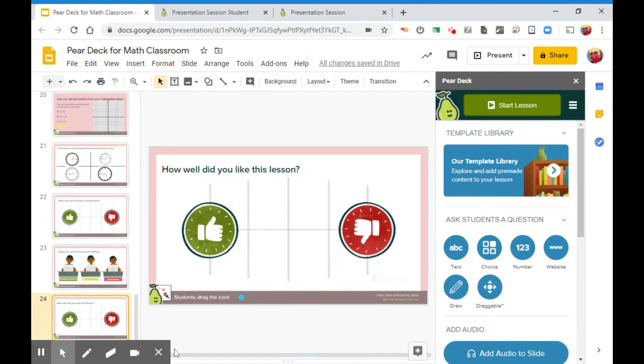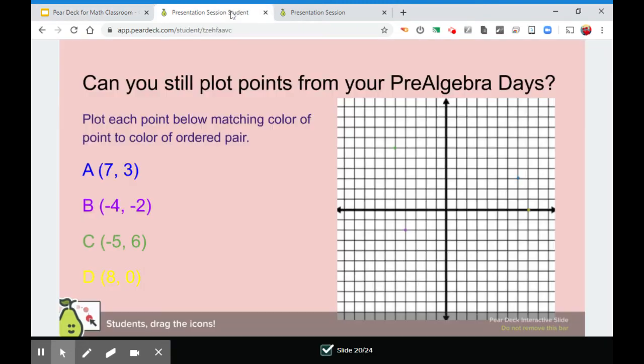And then how well did you like the lesson? They can drag thumbs up, thumbs down. So let's take a look at the student view. Here's the one I was talking about. See how my points were really small. I should have made these a little bit bigger. I made the mistake of making the points way too big in the past. So student can drag it and maybe they get the right spot. Maybe they make a mistake. You'll be able to tell if they made mistakes or if they got the right answer.